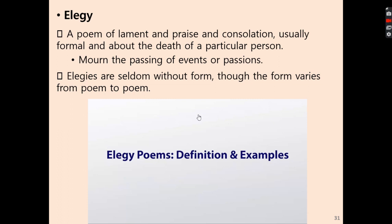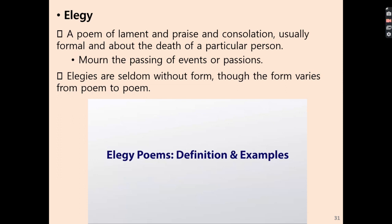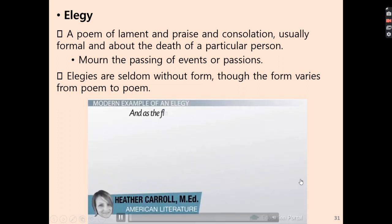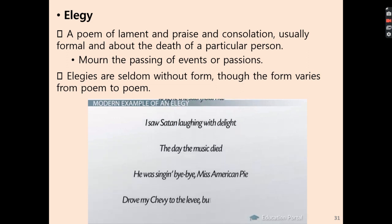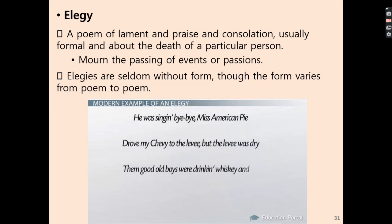Then we have the elegy. Elegy is a poem of lament, praise, and consolation. It is usually formal and about the death of a particular person. It can also mourn the passing of events or passions, and while elegies are seldom without form, the form varies from poem to poem. For example, Don McLean's 1971 song 'American Pie' mourns the loss of Buddy Holly, Richie Valens, and the Big Bopper in a 1959 plane crash, as well as the end of an optimistic era in America.